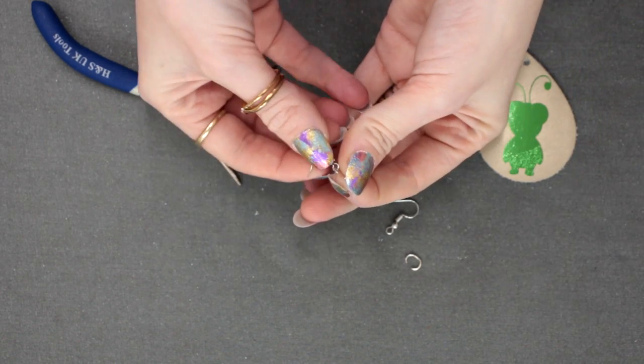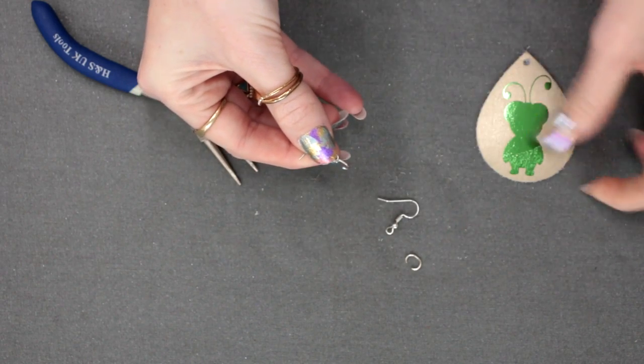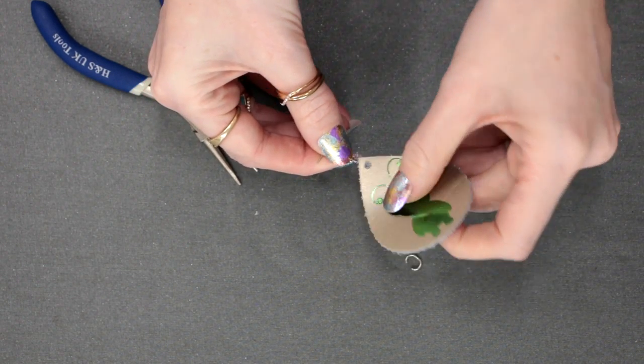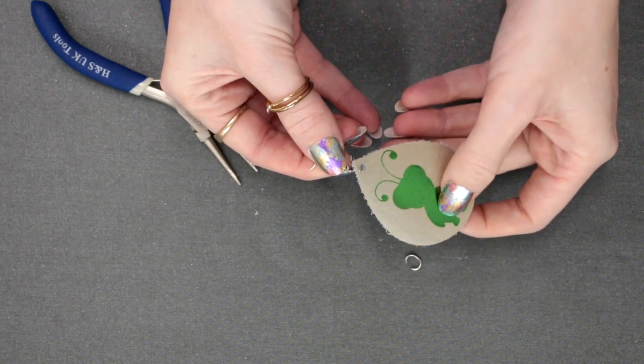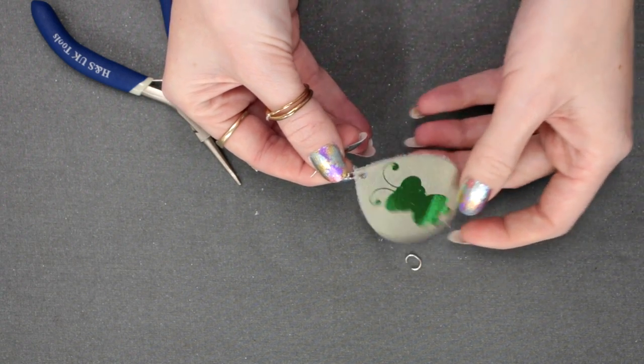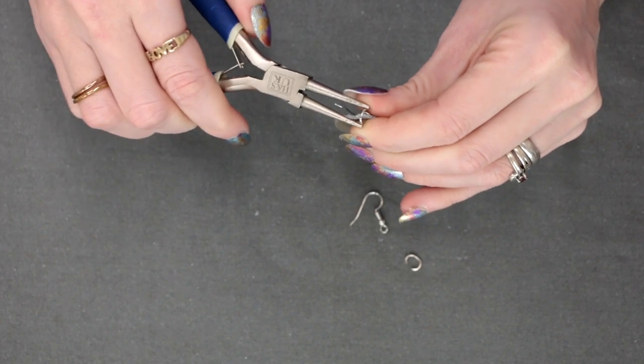You can then get your earring piece and place one end of the hoop through the earring piece and one end through your metallic leather. You then want to use your tool to close that gap.